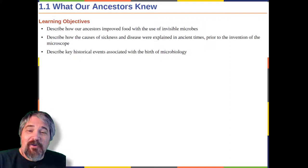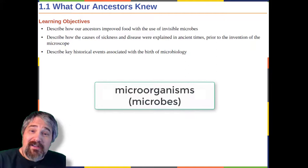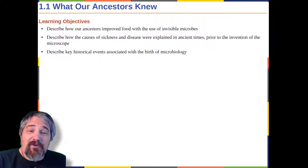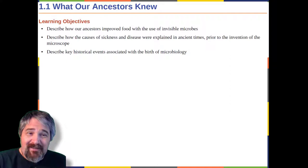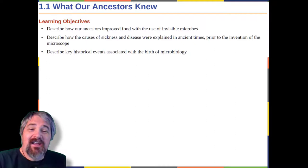By definition, microorganisms, or microbes, are very small organisms. Many types of microbes are too small to see without a microscope, although some parasites and fungi are visible to the naked eye. Humans have been living with and using microorganisms for much longer than they have been able to see them. Historical evidence suggests that humans have had some notion of microbial life since prehistoric times, and have used that knowledge to develop foods as well as prevent and treat disease. In this section, we will explore some of the historical applications of microbiology, as well as the early beginnings of microbiology as a science.